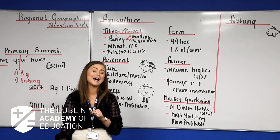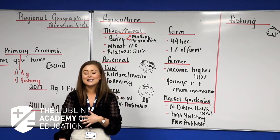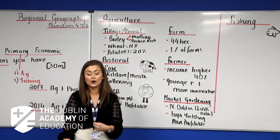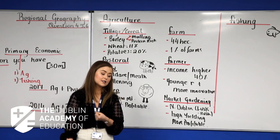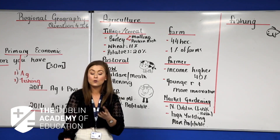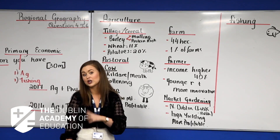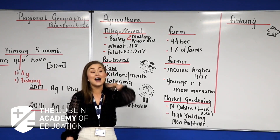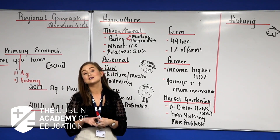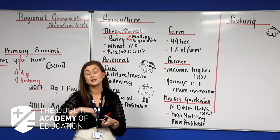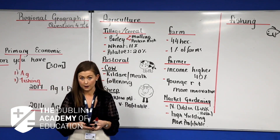Urban sprawl — the uncontrollable spread of urban areas out towards the countryside — is one of the key threats to agriculture within the GDA. As Dublin city, with its 1.4 to 1.9 million people in the GDA, continues to expand outward, agricultural land comes under increasing pressure.